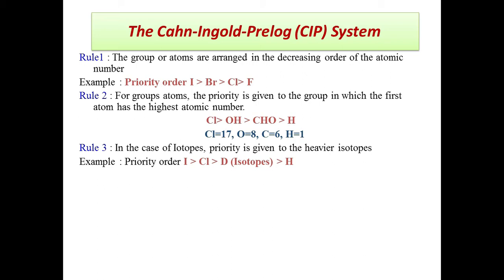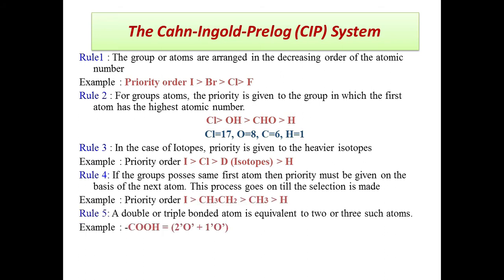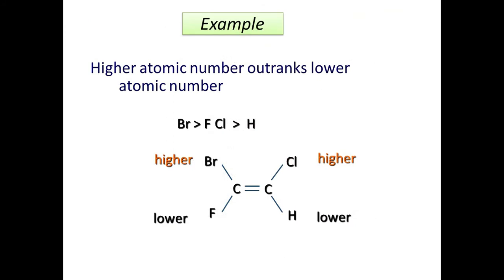CIP Rule 4: if groups possess the same first atom, priority must be given based on the next atom. For example, between -CS₃ and -CS₂, the same first atom is present, so you look at the next atom. Rule 5: a double- or triple-bonded atom is counted as equivalent to two or three such atoms.